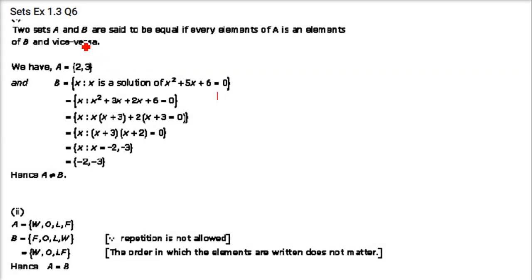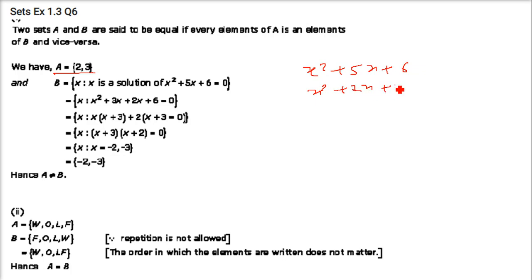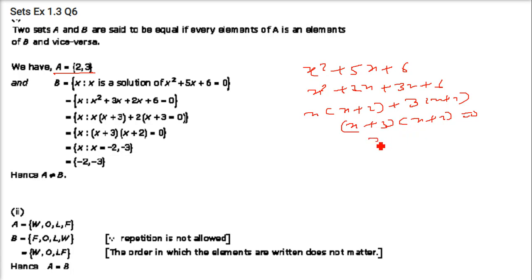Next: are the following pairs of sets equal? First, A = {2, 3} and B = x such that x² + 5x + 6 = 0. Factorizing: x² + 2x + 3x + 6 = x(x+2) + 3(x+2) = (x+3)(x+2) = 0, giving x = −3 and x = −2. So B = {−2, −3}, which is not equal to A = {2, 3}, though they are equivalent.